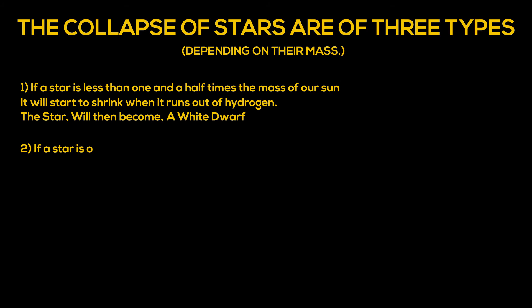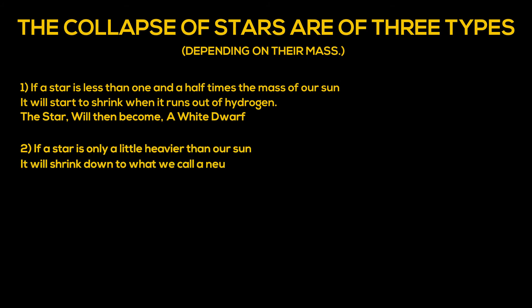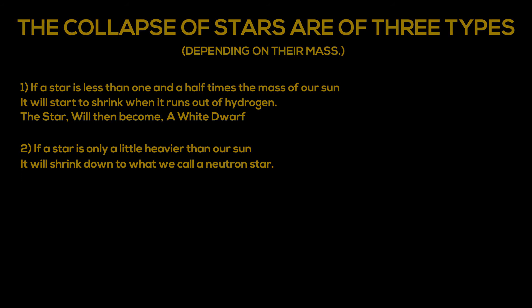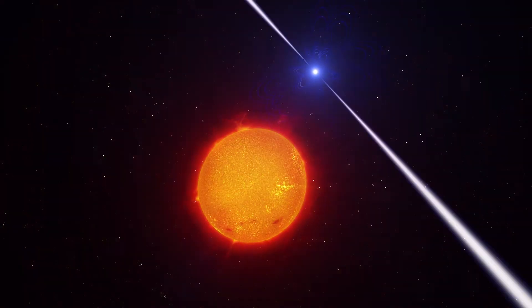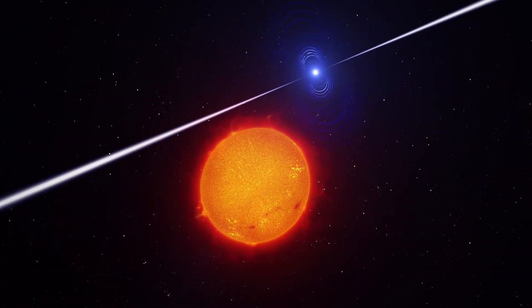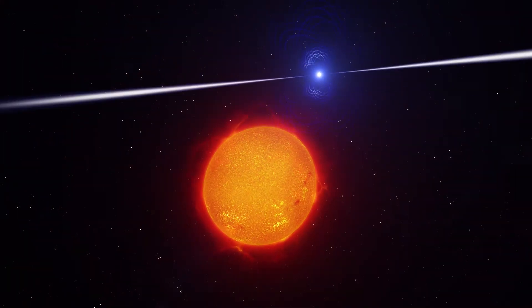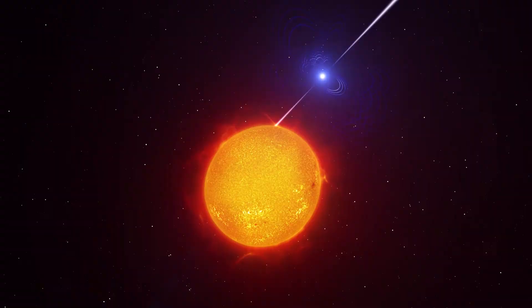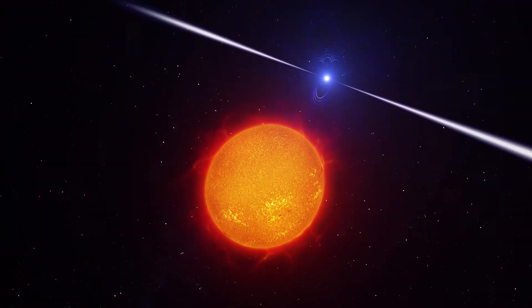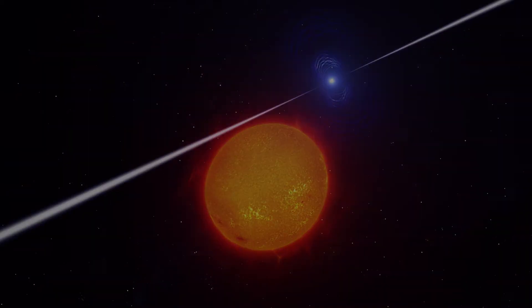If a star is only a little heavier than our sun, it will shrink down to what we call a neutron star. Neutron stars are extremely dangerous and hostile stars, which come in different varieties. They are extremely dense and dangerous.